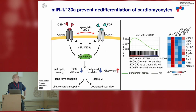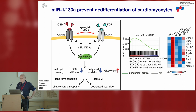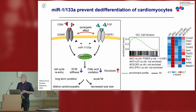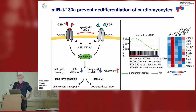Both receptors cooperate to establish this rather massive phenotype. And similar to what Elder told us yesterday, this is not a good thing. If we induce de-differentiation by removing microRNA-1 and microRNA-133A, then we also have massive cardiac failure after a couple of weeks, because contractility drops dramatically due to sarcomere disassembly.